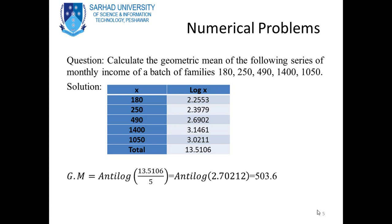Numerical problem: Calculate the geometric mean of the following series of monthly income of five families: 180, 250, 490, 1400, and 1050. Solution: taking these as the X column and computing the log of each value using a calculator — log 180 = 2.2553.